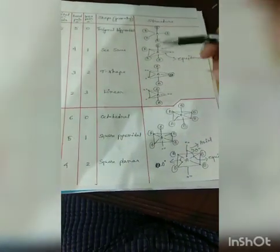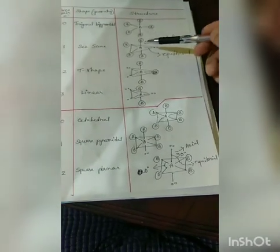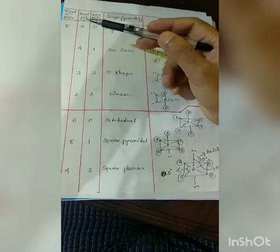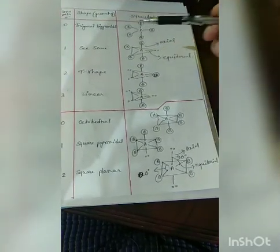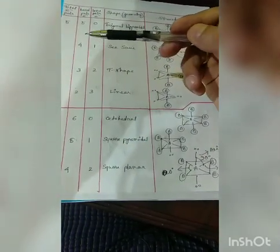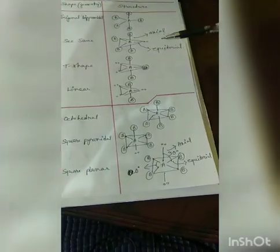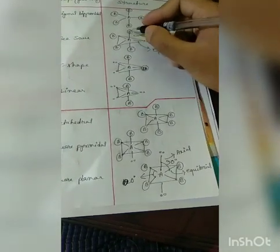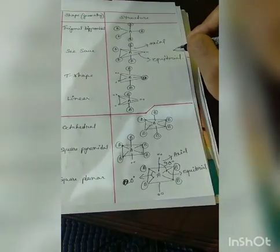Let's look at the other example. The molecule is PCl5. I have a lone pair and a bond pair. There is a triangular plane with axial and equatorial positions. The lone pair is placed in certain positions, and the bone pair is in this position.